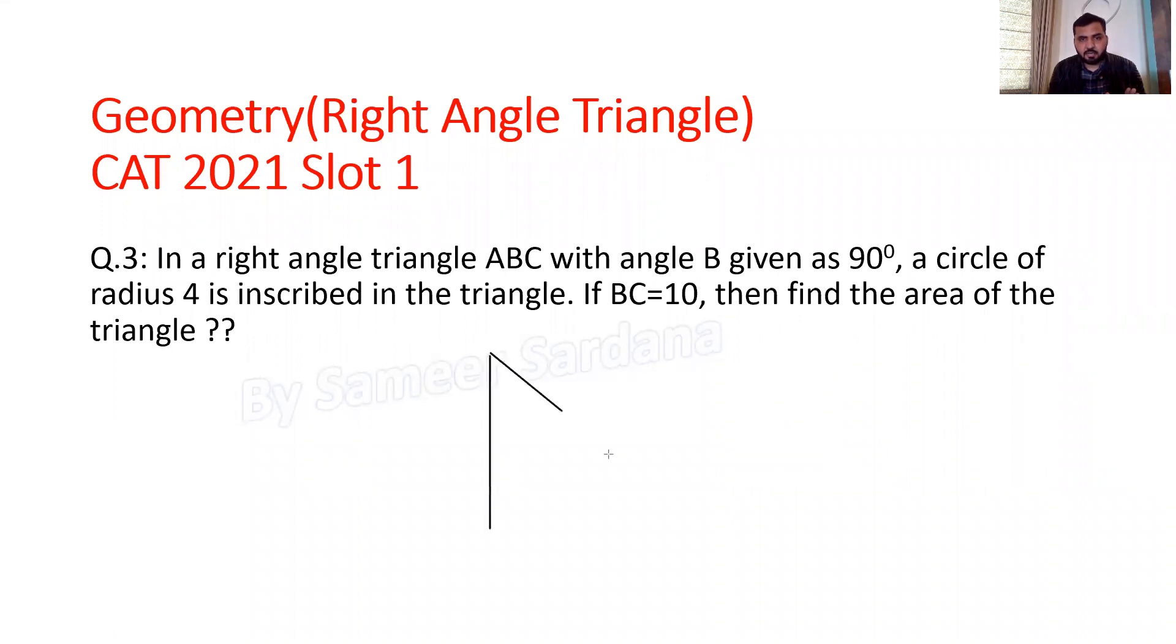It says in a right angle triangle ABC with angle B given as 90 degrees. So this is A, this is B, this is C. This angle is given as 90 degrees.